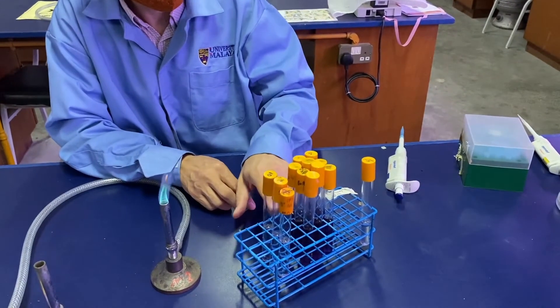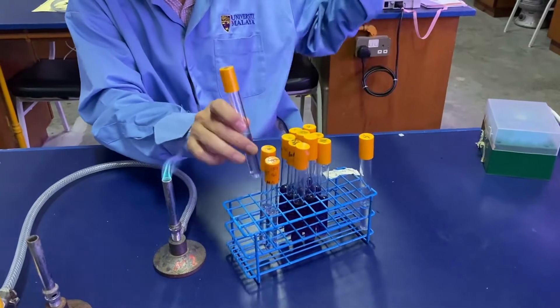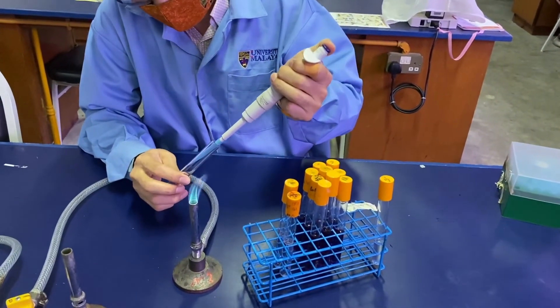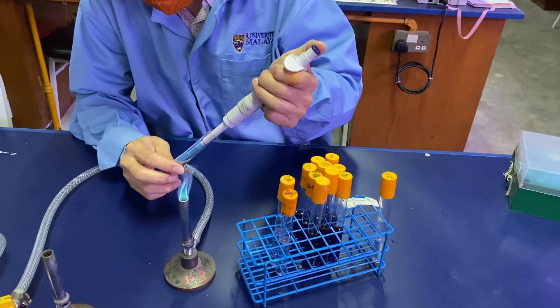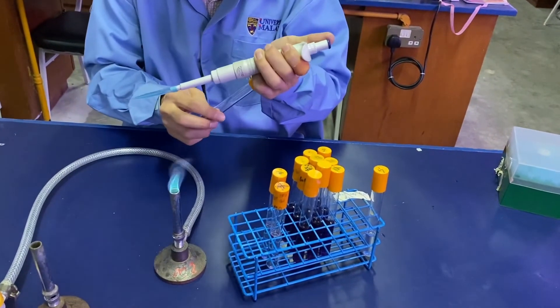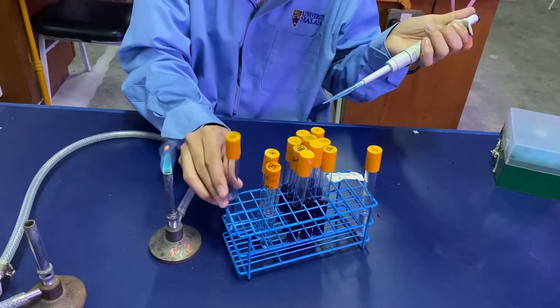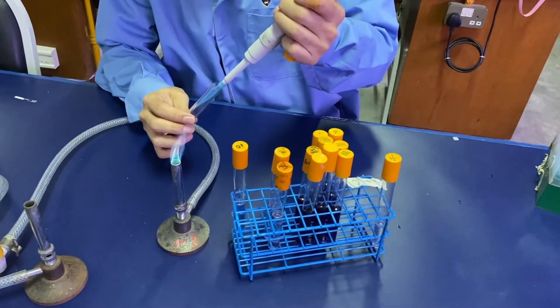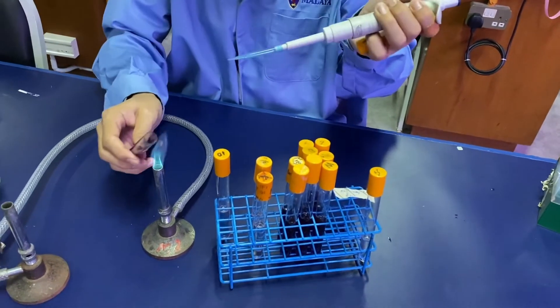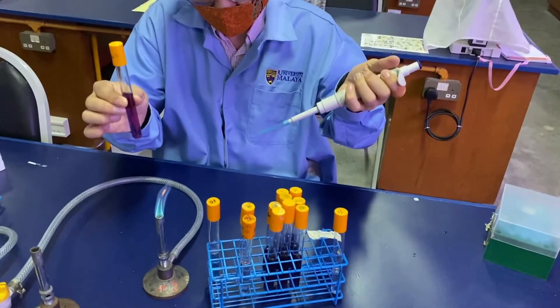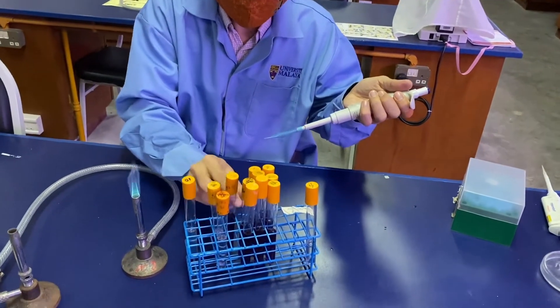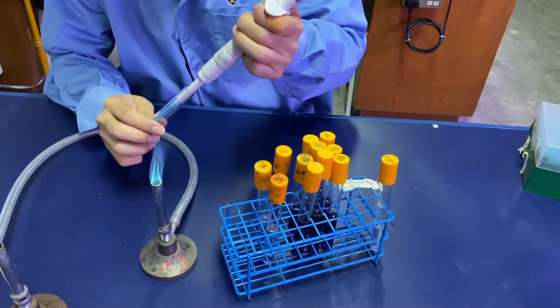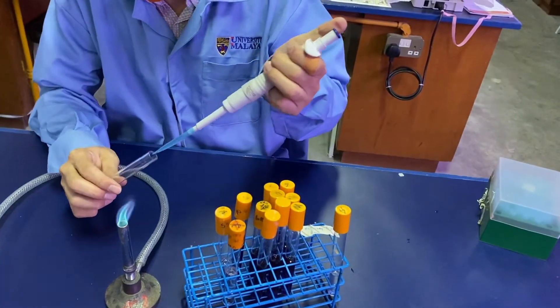Into the MPN tubes. Usually I will start with the one with the highest dilution, which is minus three. This is to minimize crossover contamination, so from minus three to minus two to minus one.